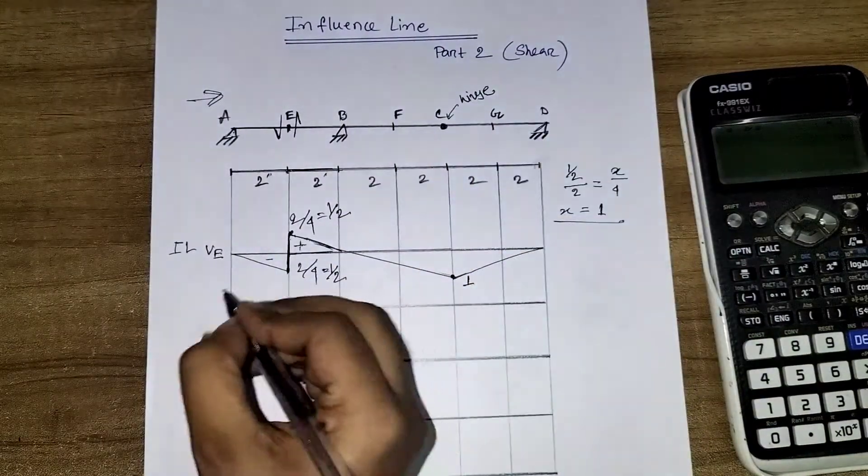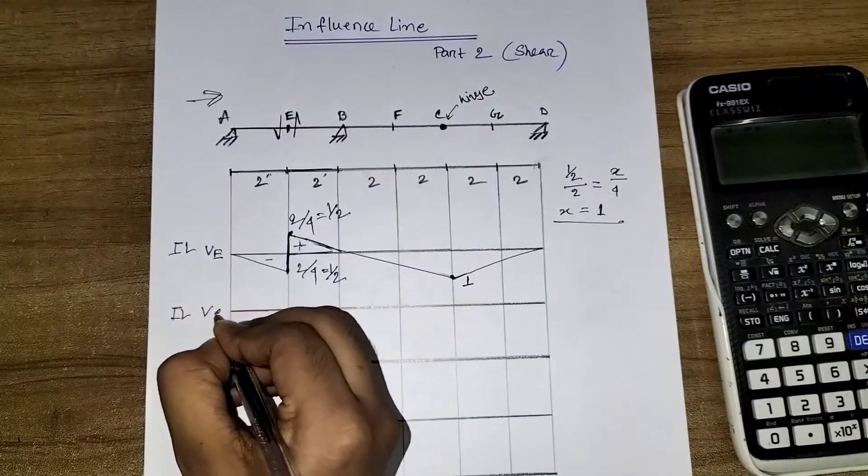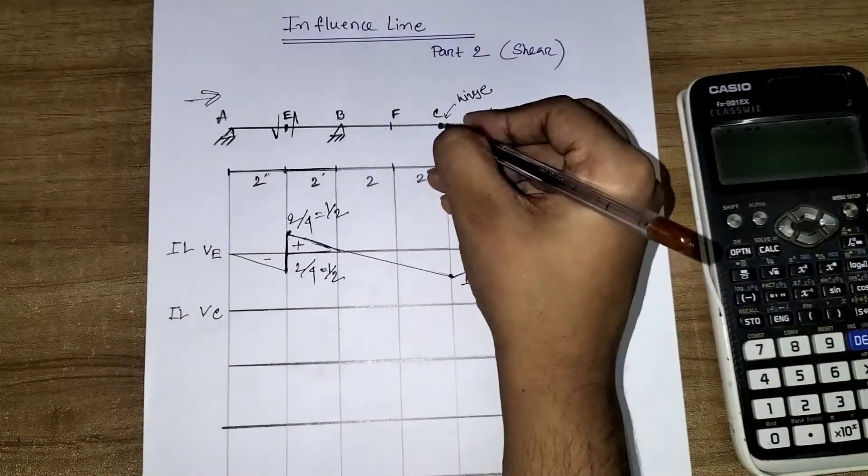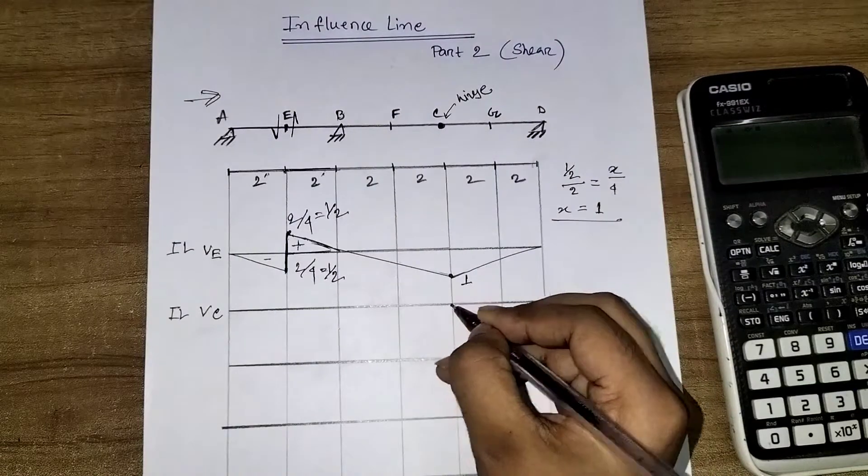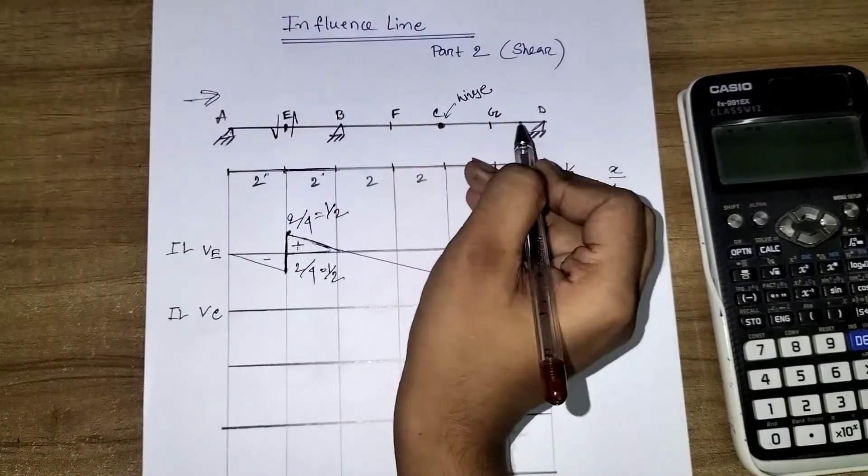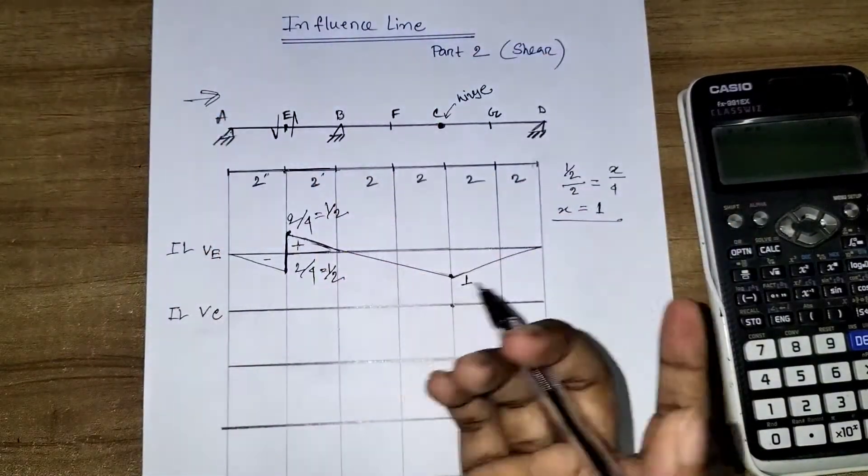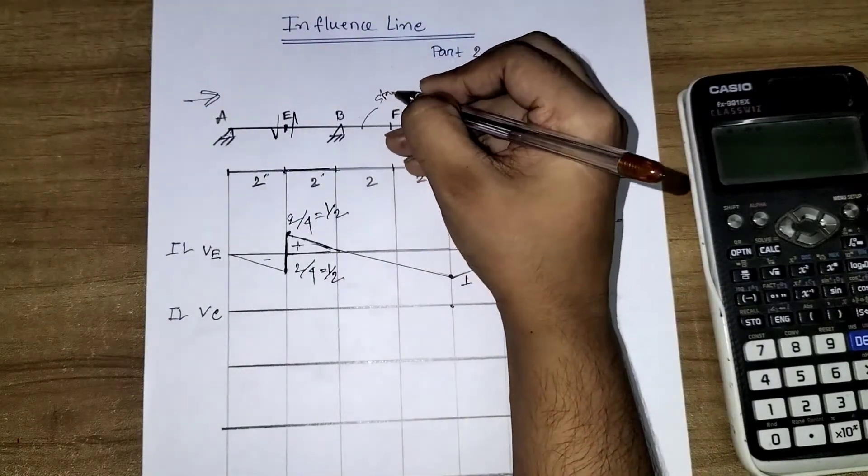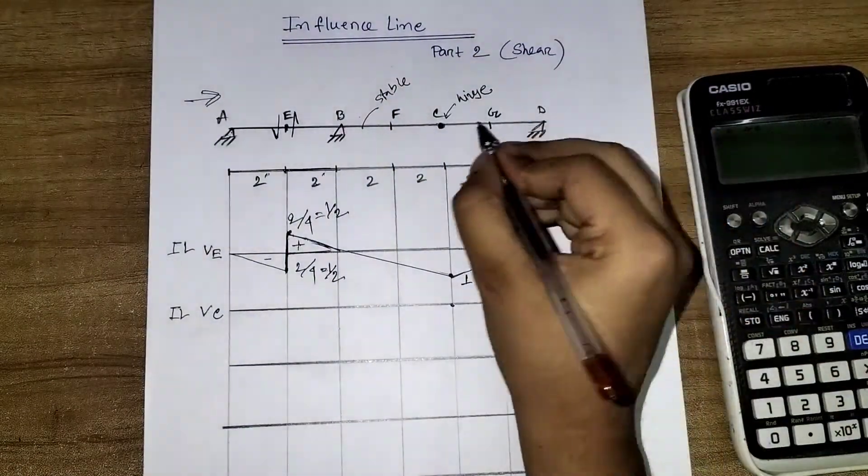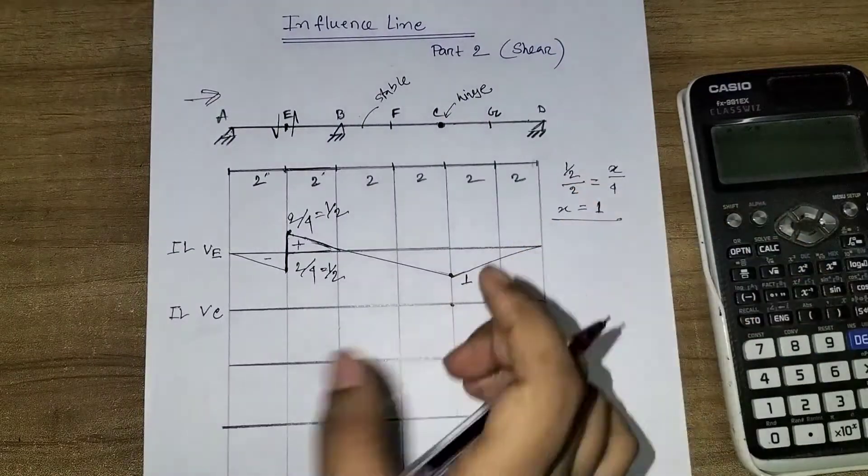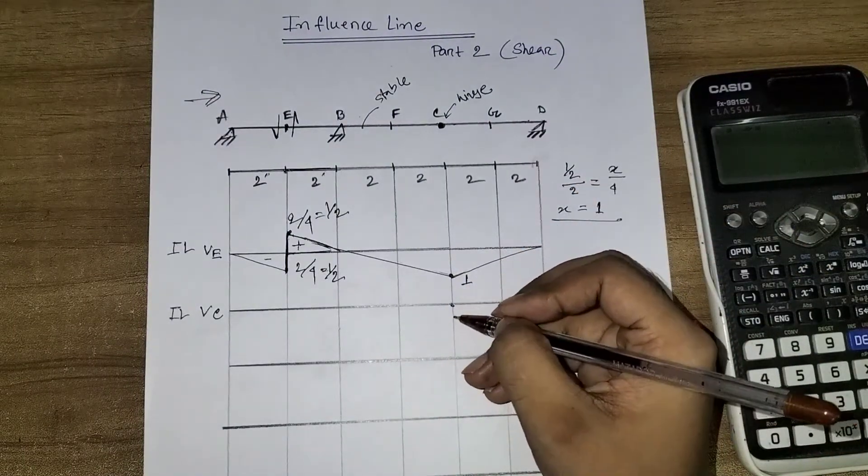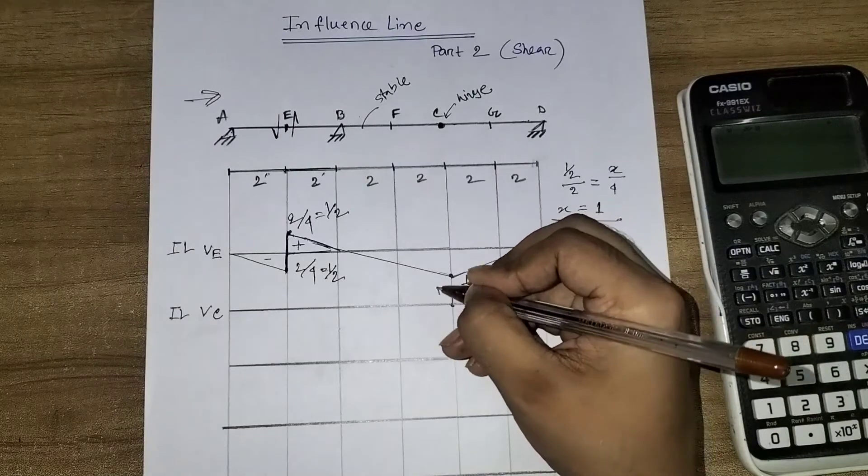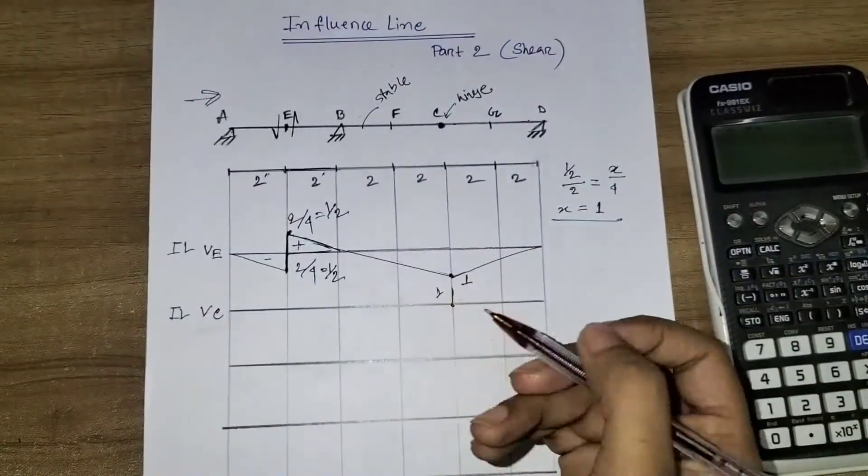I will now draw the shear at point C, influence line VC. At this point, A to C is stable, this part is stable. So one unit upward movement up to the hinge, and then